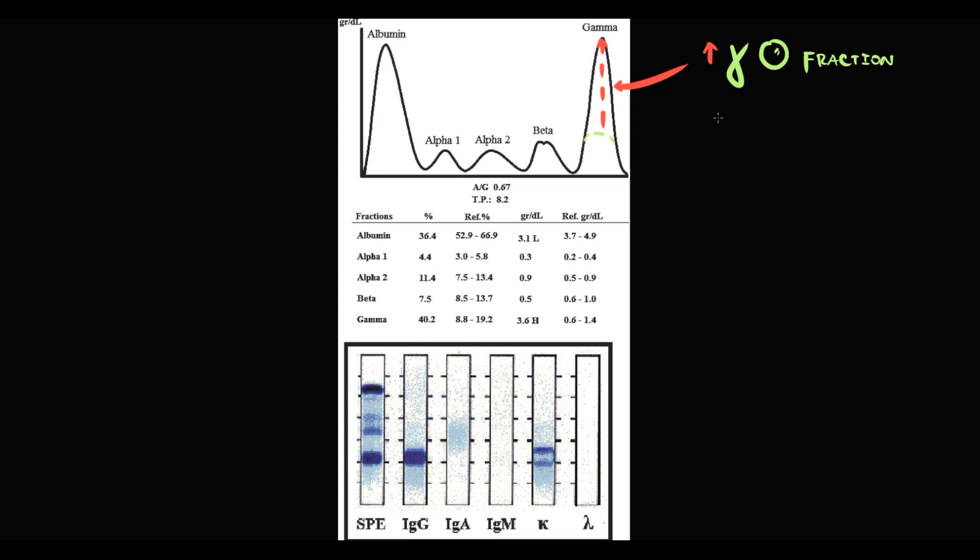So below we have immunofixation. And as we see here, there are a lot of gamma globulins in immunoglobulin G and kappa-light chain fractions. Based on this, we can say that it's Benz-Jones multiple myeloma.